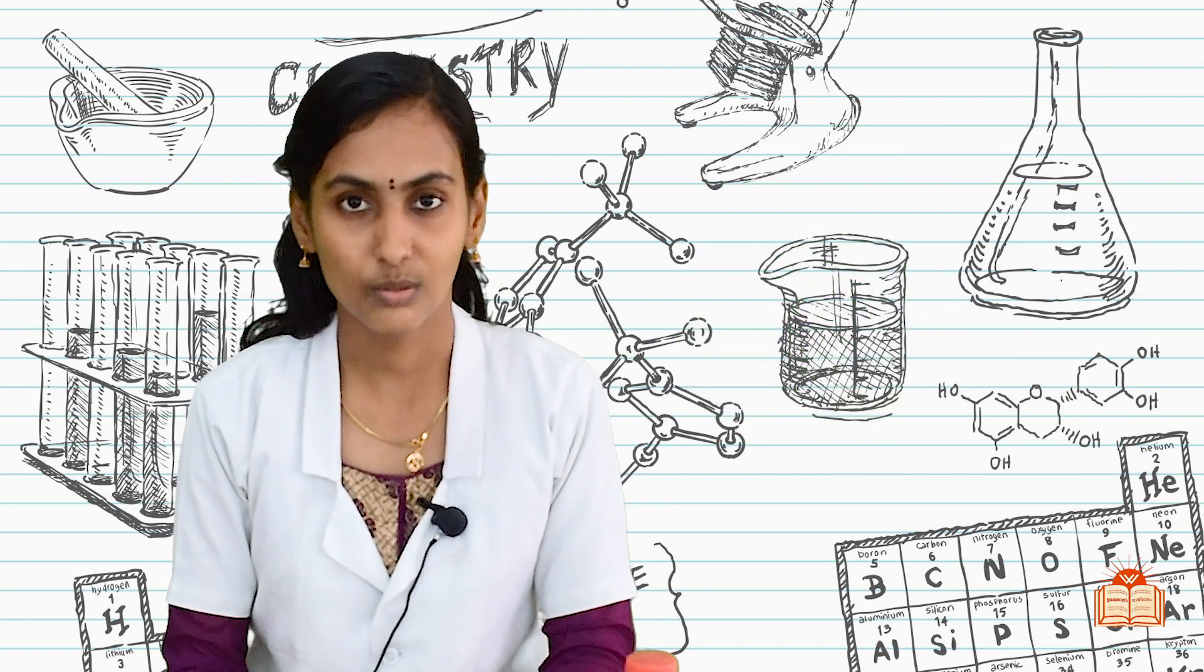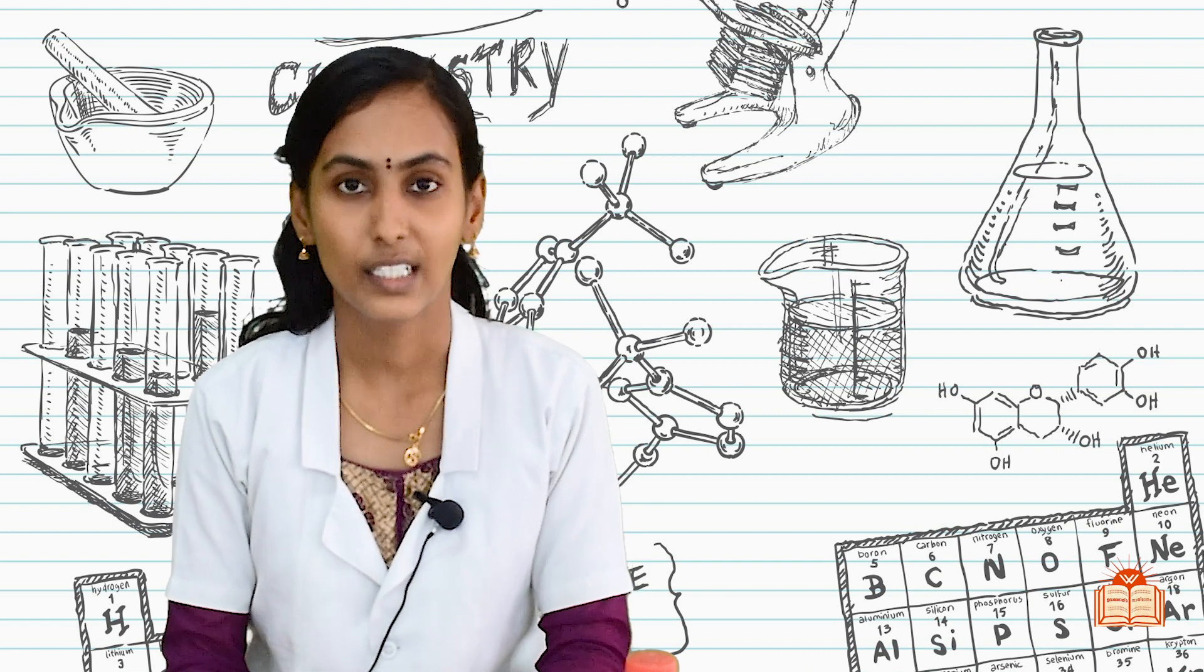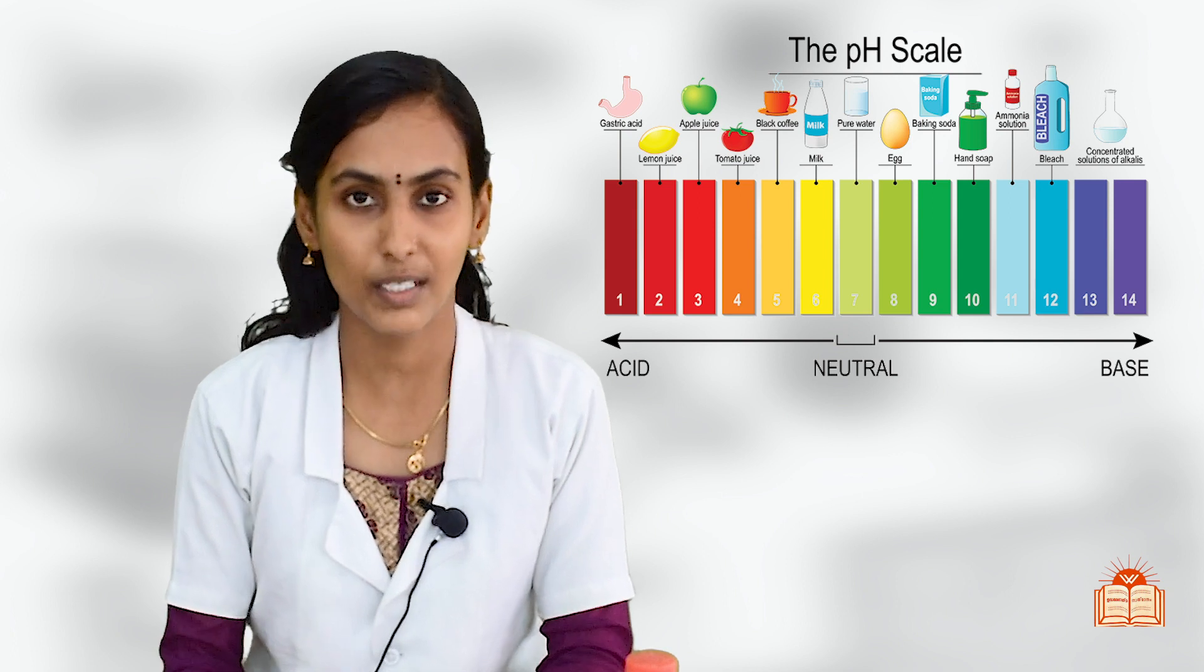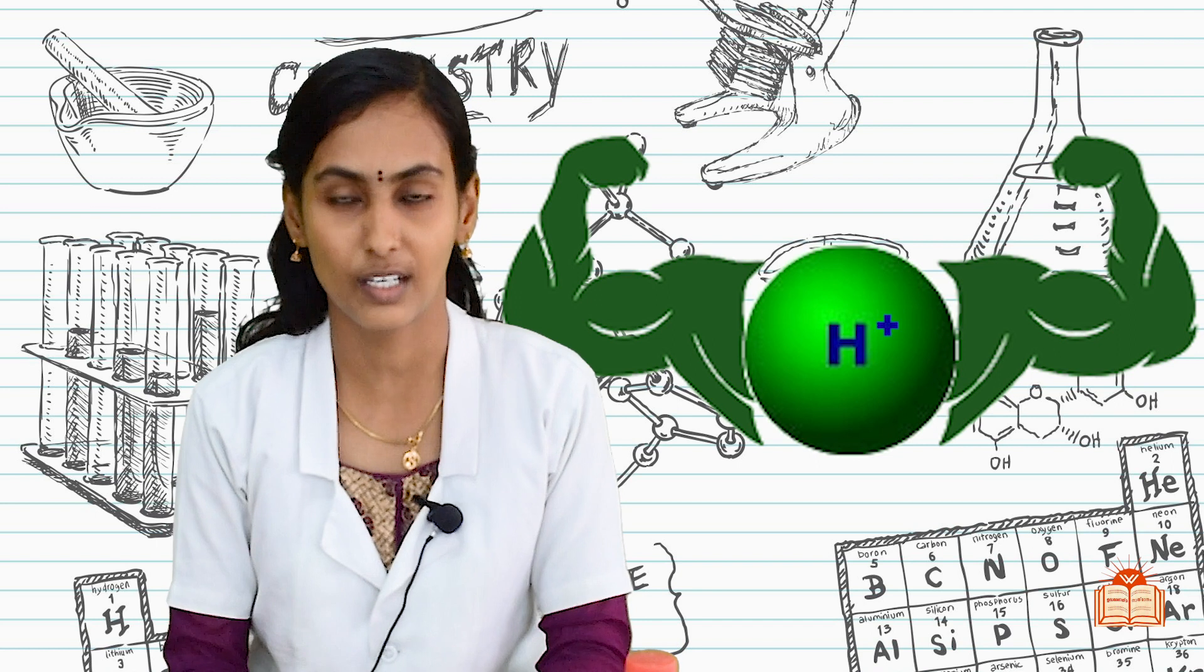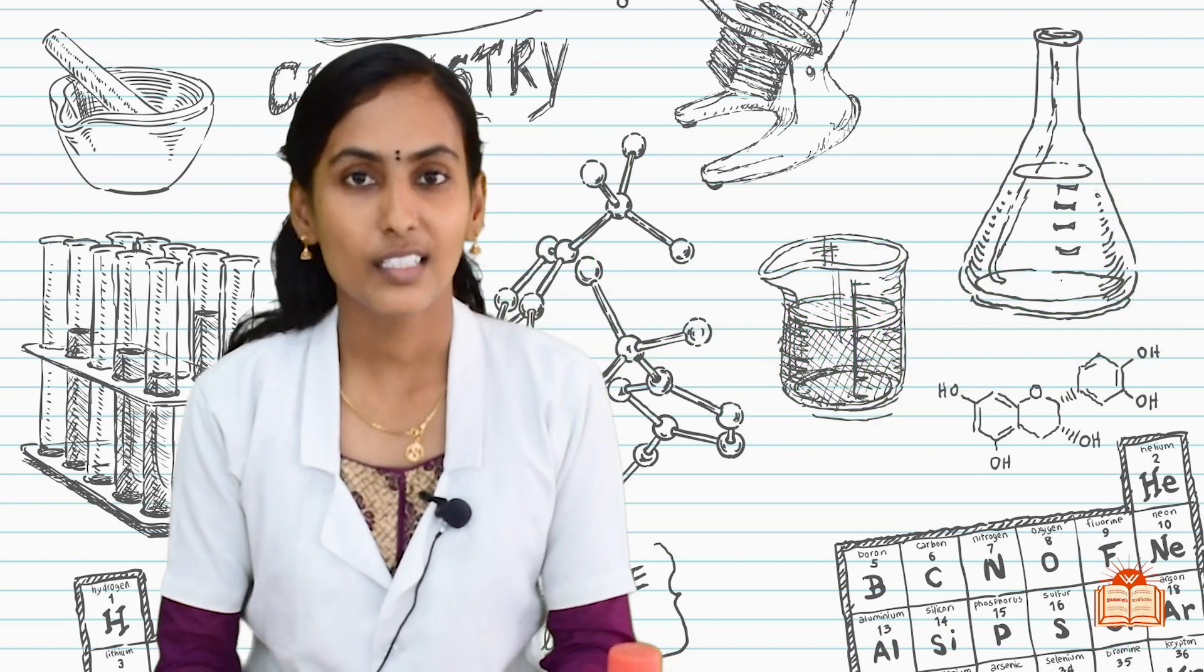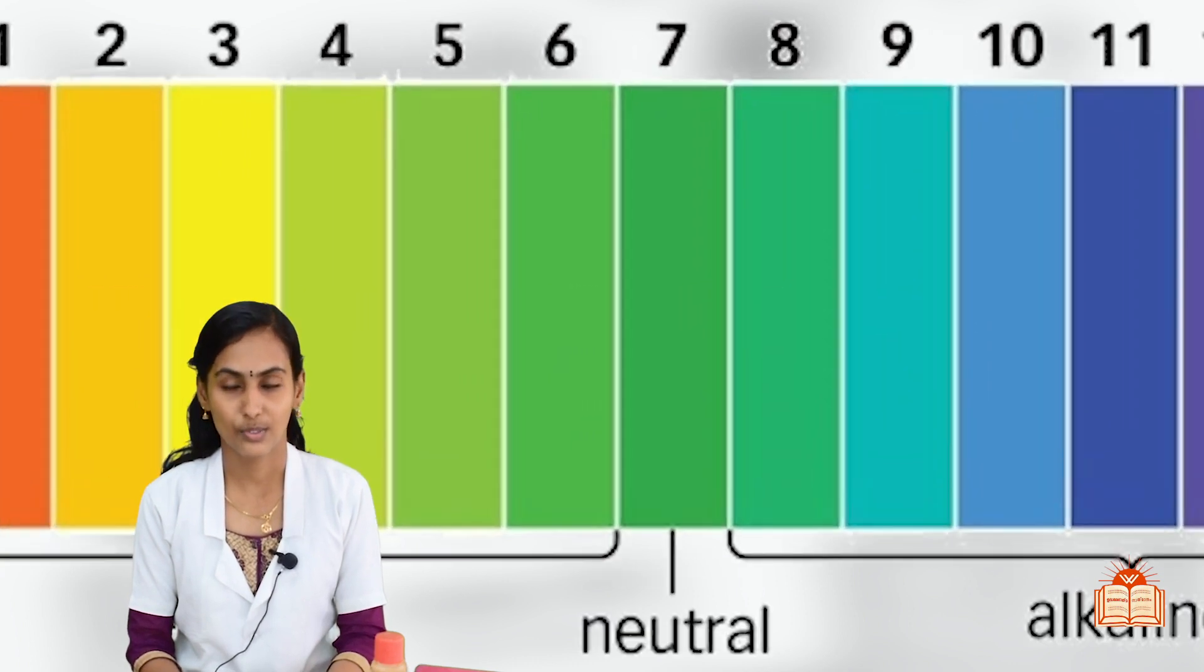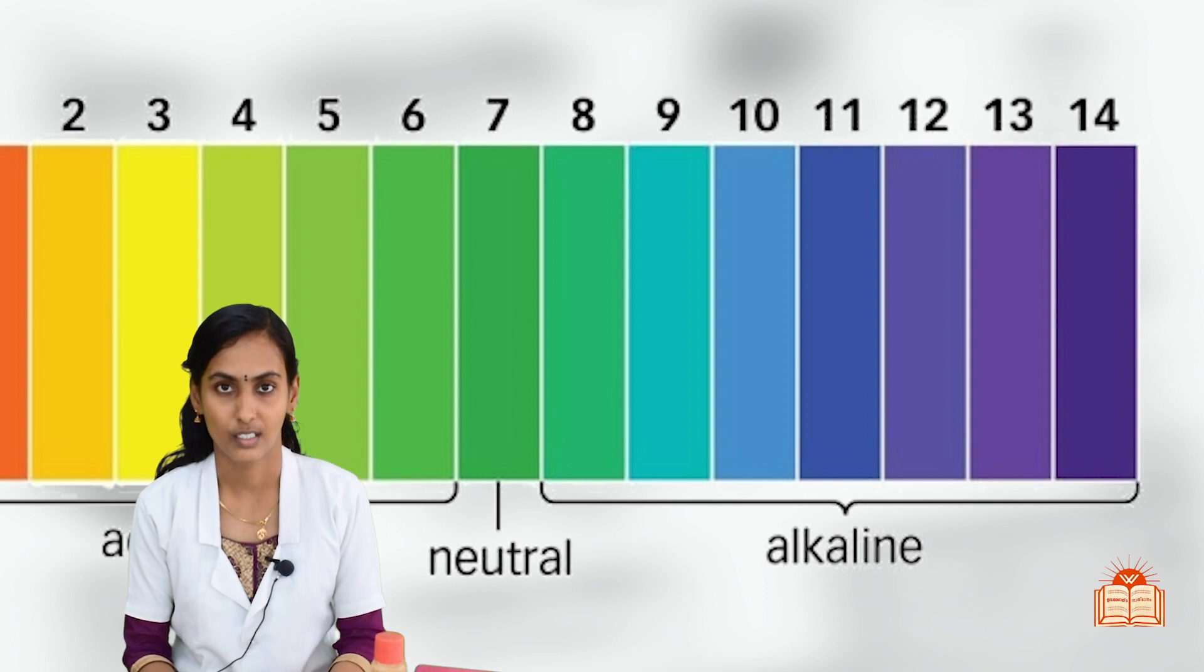So as per the concentration of H plus ion present in the substances, he derived the pH scale. Now, what is meant by pH? It is potence of hydrogen ion, power of hydrogen ion. pH range is from 0 to 14, the 7 value is neutral solution, below 7 is acidic solution, above 7 is basic solution.